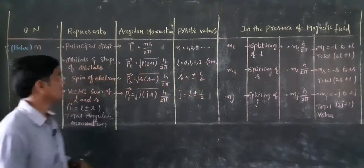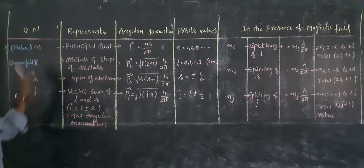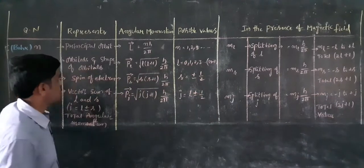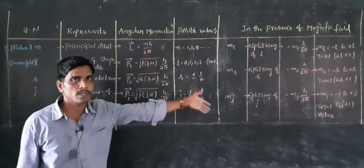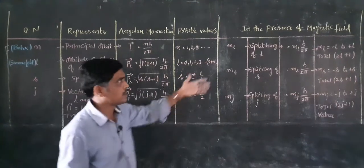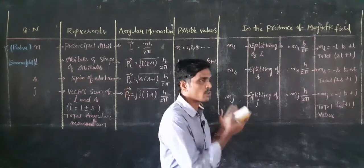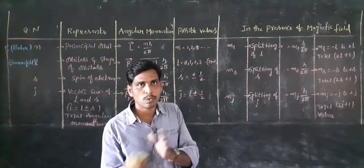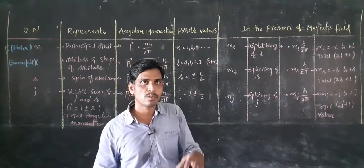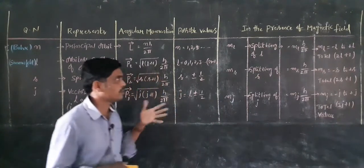This covers the four quantum numbers. Whenever these apply to an electron in any energy state, we can describe everything. The importance of these is seen in the Zeeman effect — in the presence of a magnetic field, splitting occurs, and we can practically explain it using these quantum numbers. After that, we can develop this concept in the vector atom model to clearly explain the Zeeman effect as an observable phenomenon.